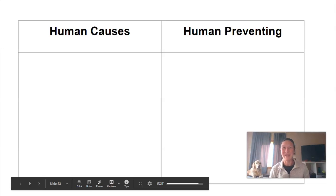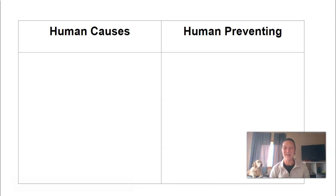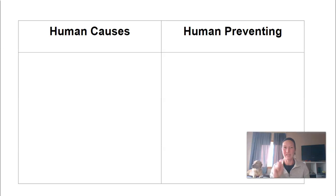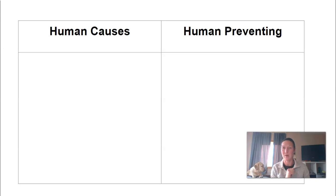What I would like you to first do is make this table in your notebook. Human causes on one side — you can put a little plus there — and then how humans prevent erosion on the other side — you can put a little minus there. So how do we speed it up, and how do we slow it down?